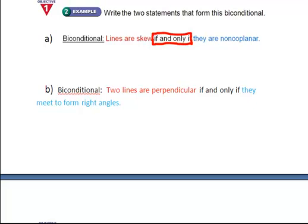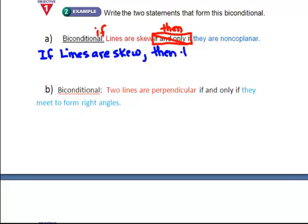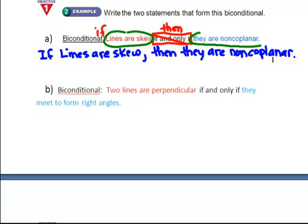We're going to go backwards. We're going to get rid of this and replace it with the word then and I'm going to put the word if in front. Now I can write one of my very first statements. So I can write if lines are skew, comma, then they are non-coplanar. Now don't forget, we can flip flop the hypothesis and the conclusion to write the converse.